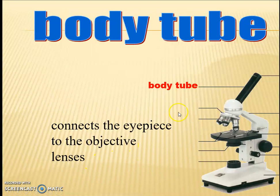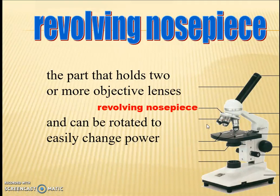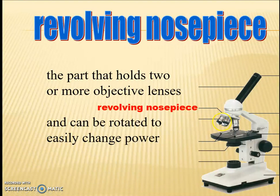The body tube connects the eyepiece to the objective lens. There are also revolving nose pieces, which are the parts that hold two or more objective lenses. In our class we are going to have three revolving objective lenses, and these can be rotated to change the magnification power.